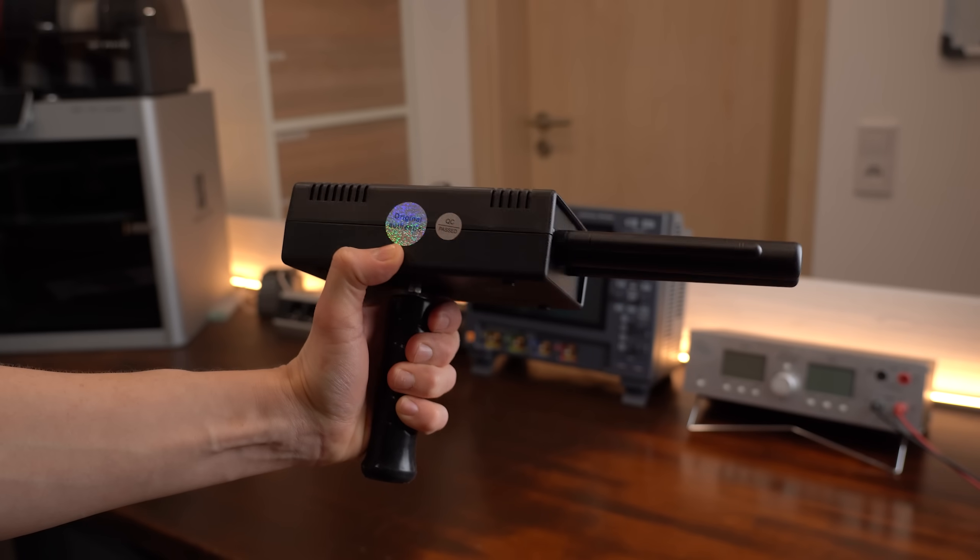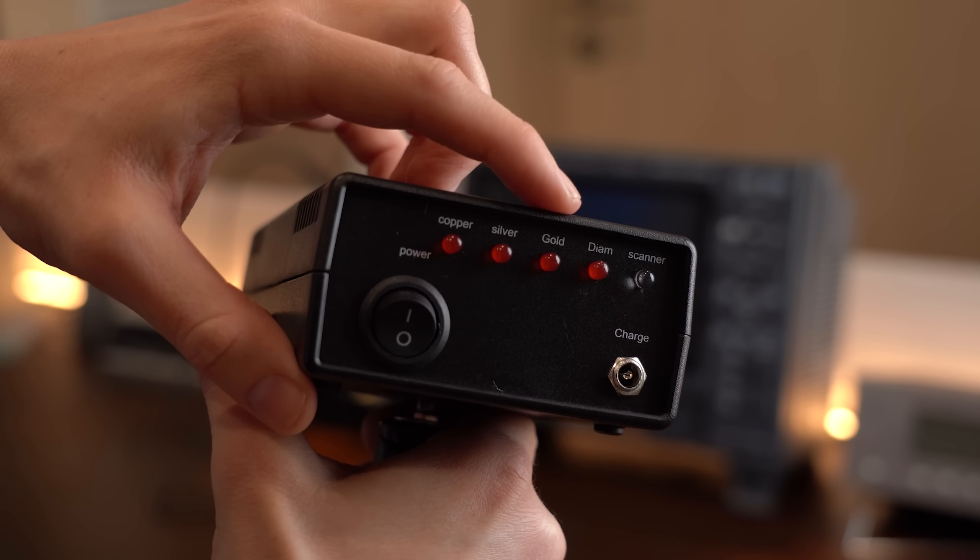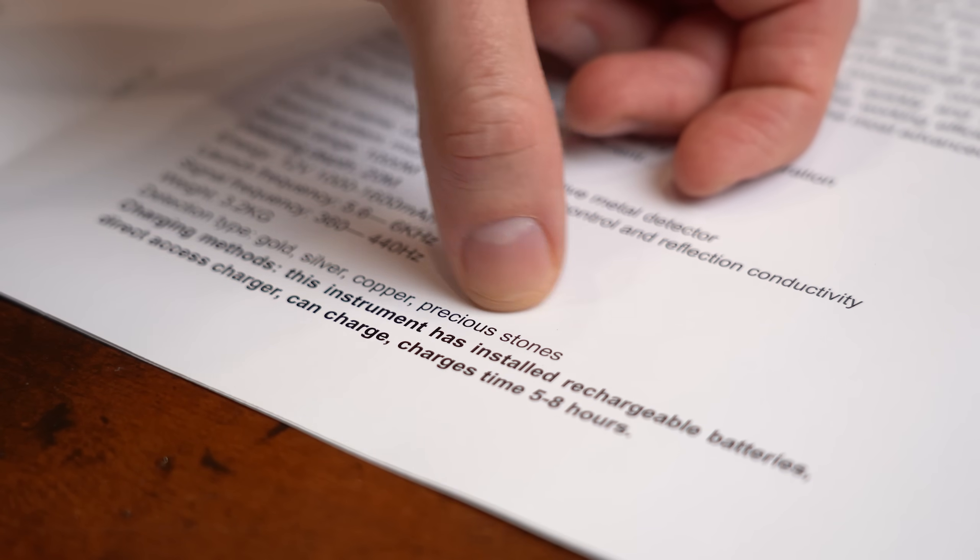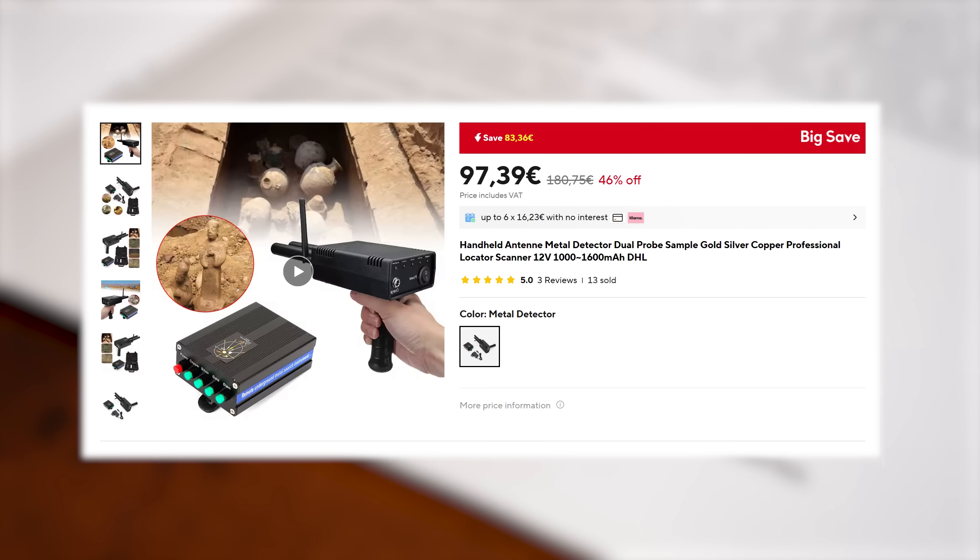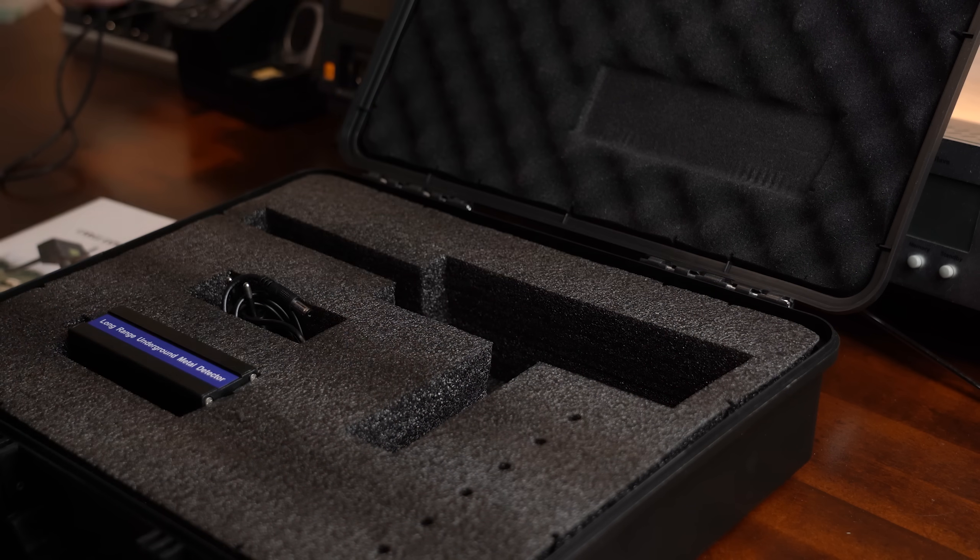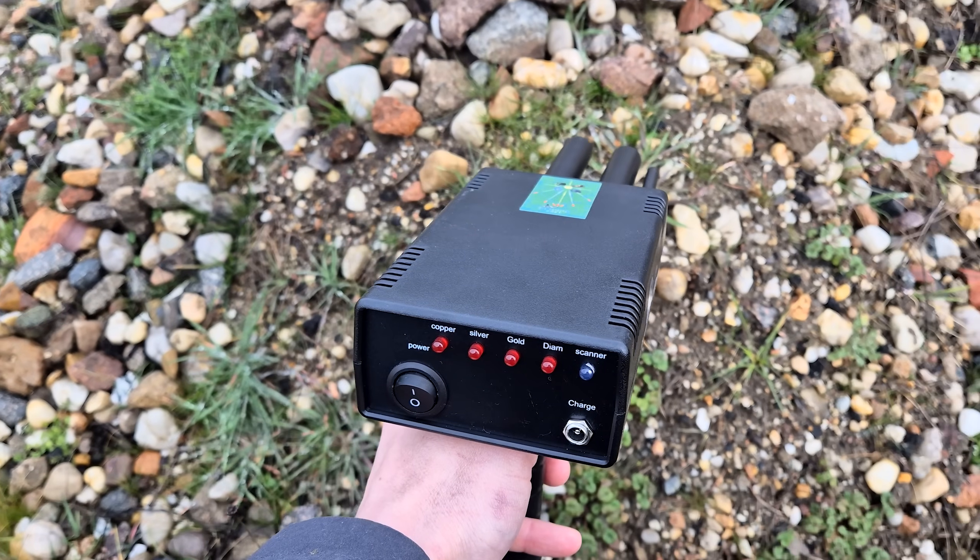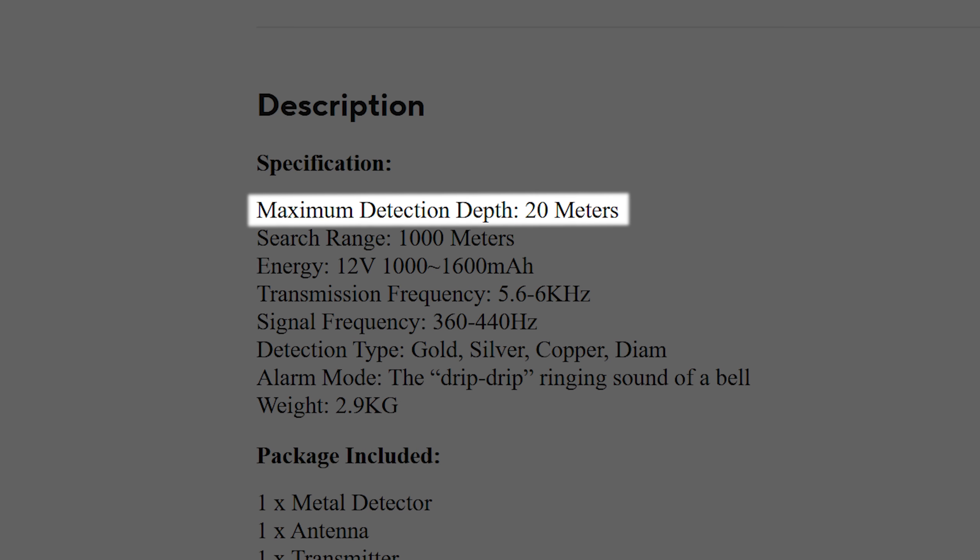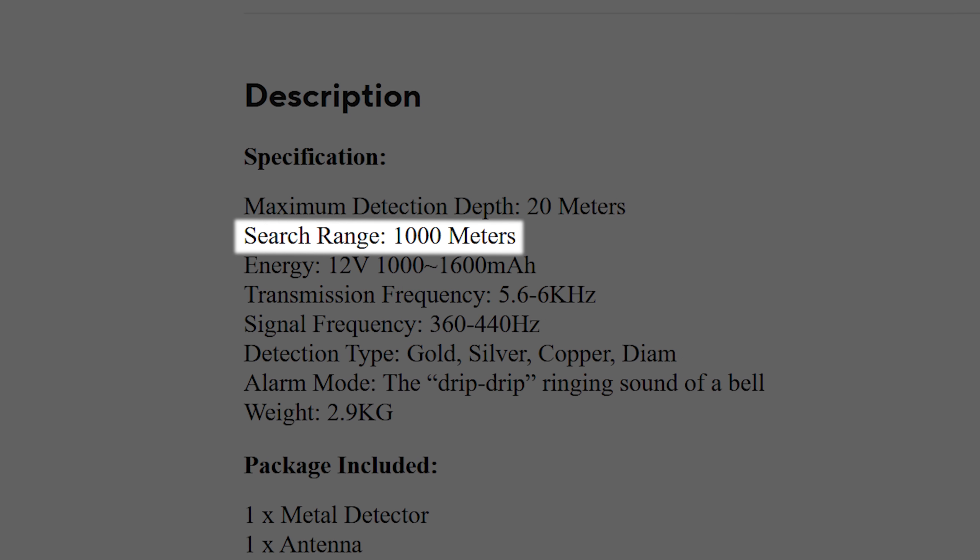Next I got myself this handheld metal detector that can detect copper, silver, gold and dime which are apparently precious stones according to the manual. But anyway you can get this thing for around €97 which is certainly not cheap. But I always wanted to find treasures in my garden and hopefully with this thing I can do that because it can supposedly detect up to a maximum depth of 20m and it comes with a search range of 1000m.